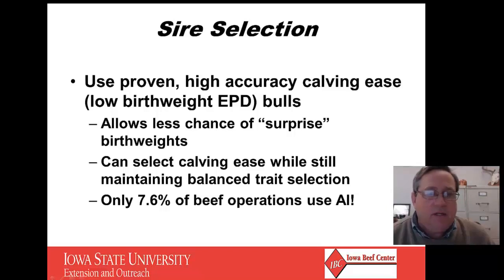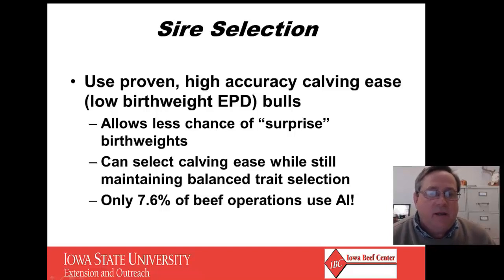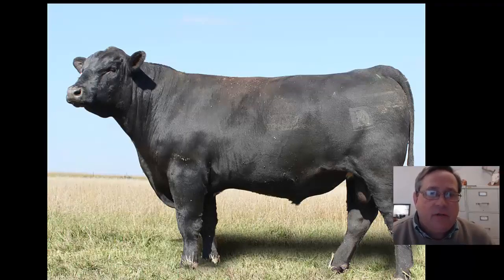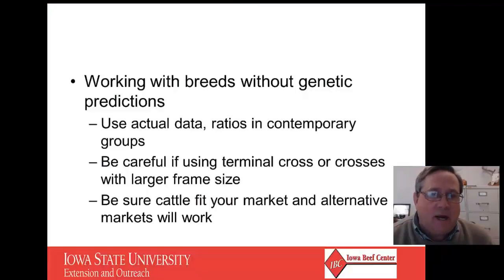One of the issues is that only 7.6% of beef operations use AI, and you pretty much have to have an AI type sire to have really high accuracy. Bulls certainly have a lot of potential — there are some great bulls out there and they can be natural service bulls — but as you do that, you need to think about using more bulls, a little more insurance and a little more room for error in case they aren't quite as highly accurate.